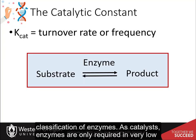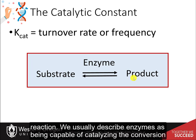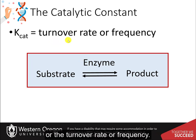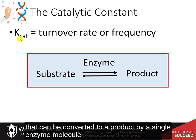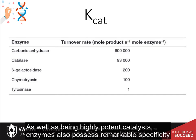As catalysts, enzymes are only required in very low concentrations, and they speed up reactions without themselves being consumed during the reaction. We usually describe enzymes as being capable of catalyzing the conversion of substrate into product, and this property is described by a constant called kcat, or the turnover rate or frequency. This catalytic constant represents the number of substrate molecules that can be converted to product by a single enzyme molecule per unit time, usually per minute or per second.